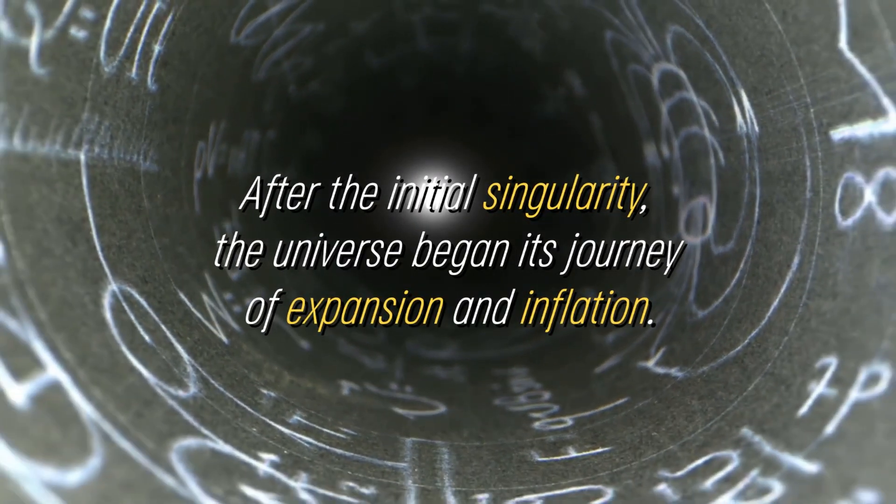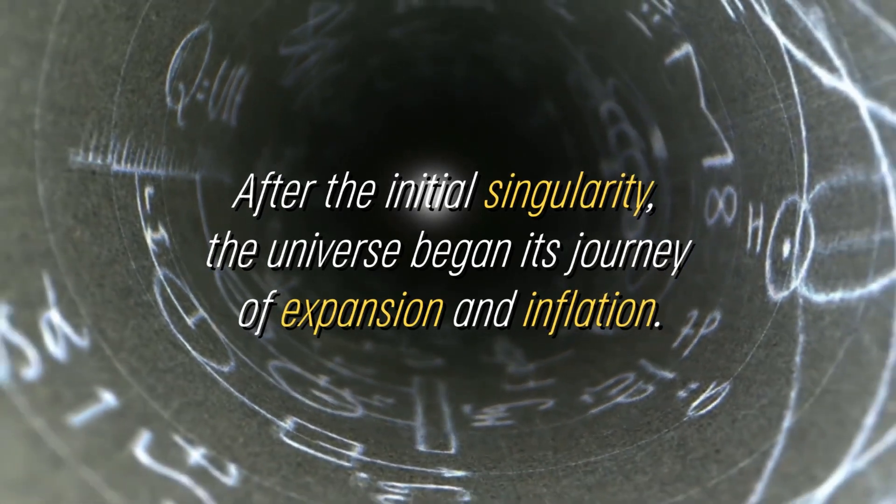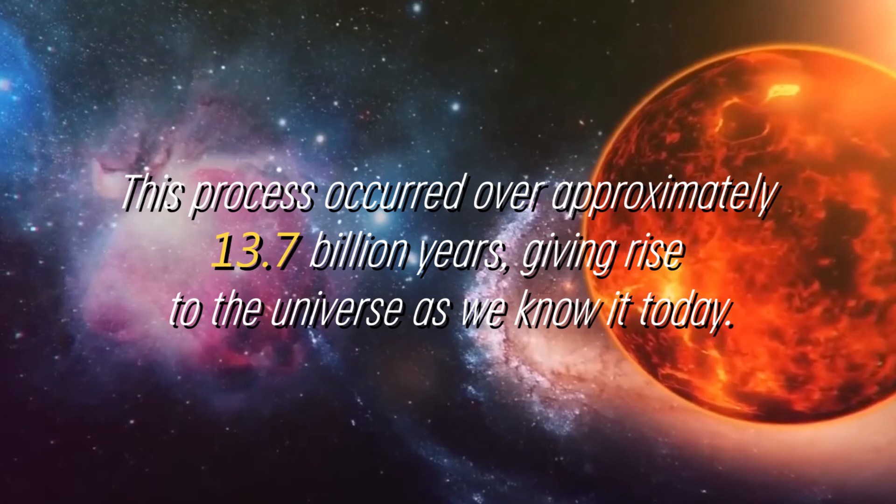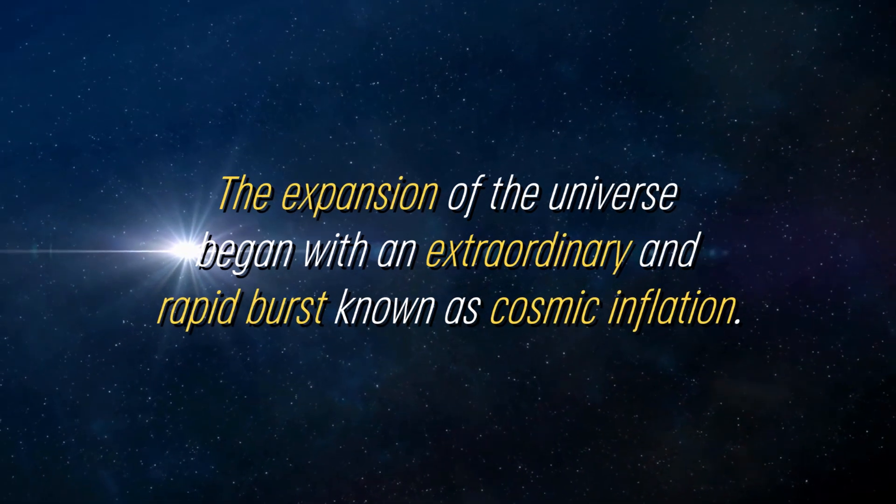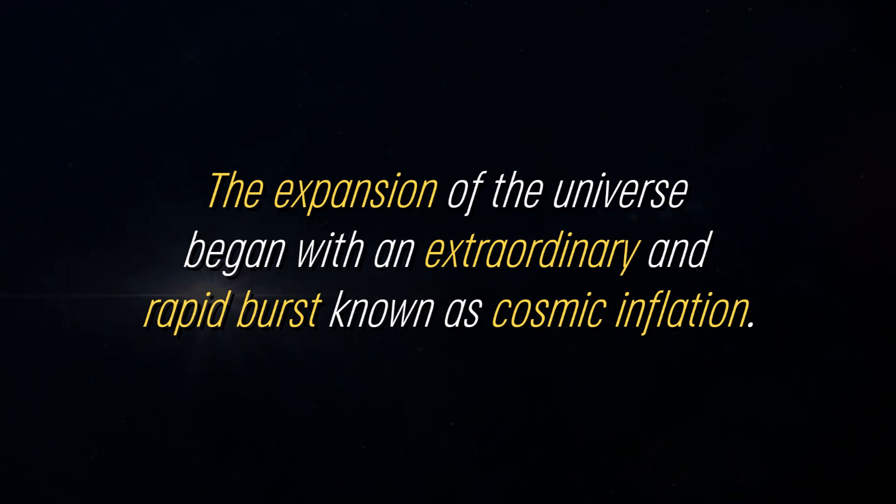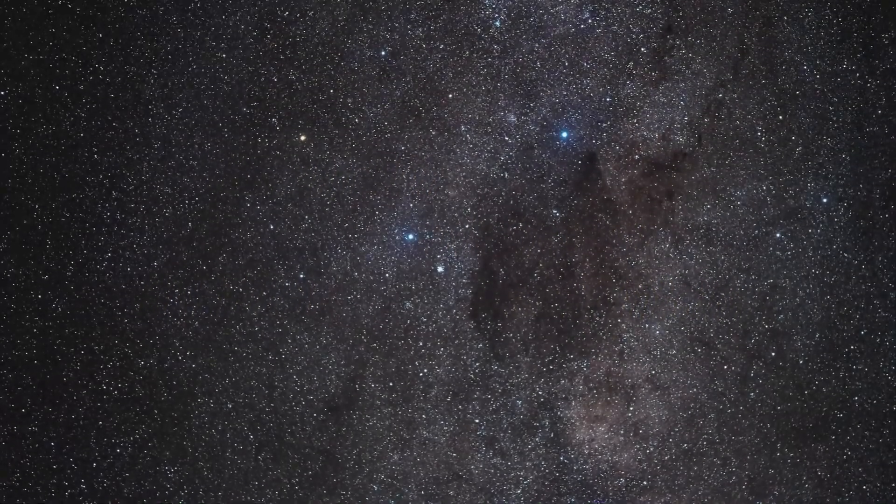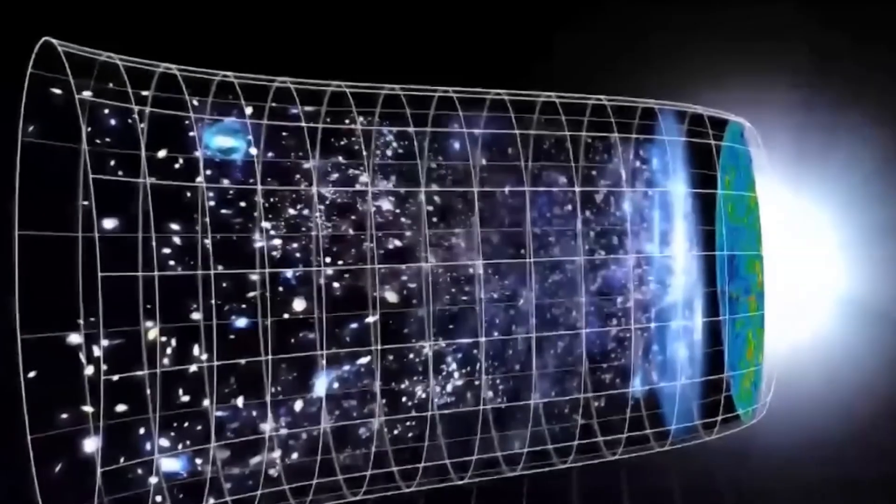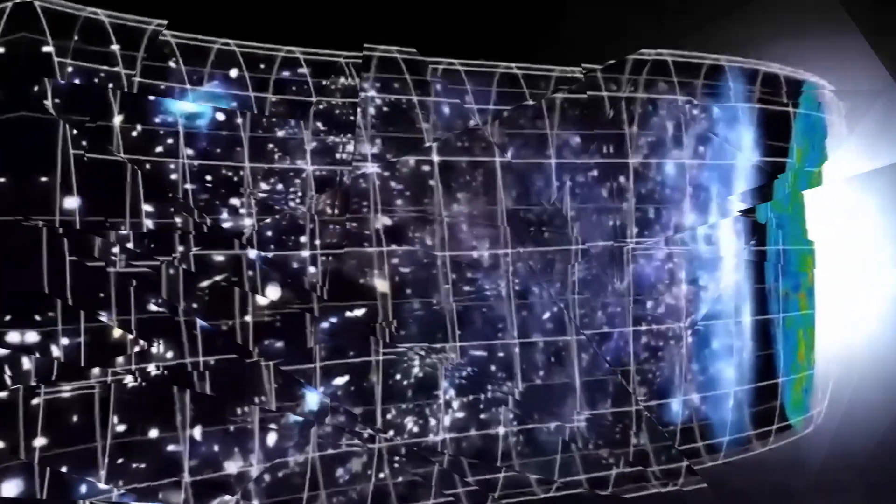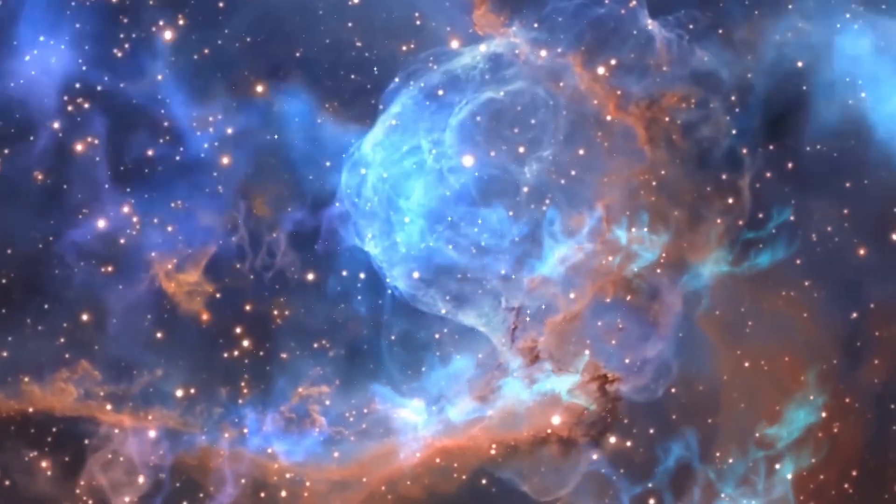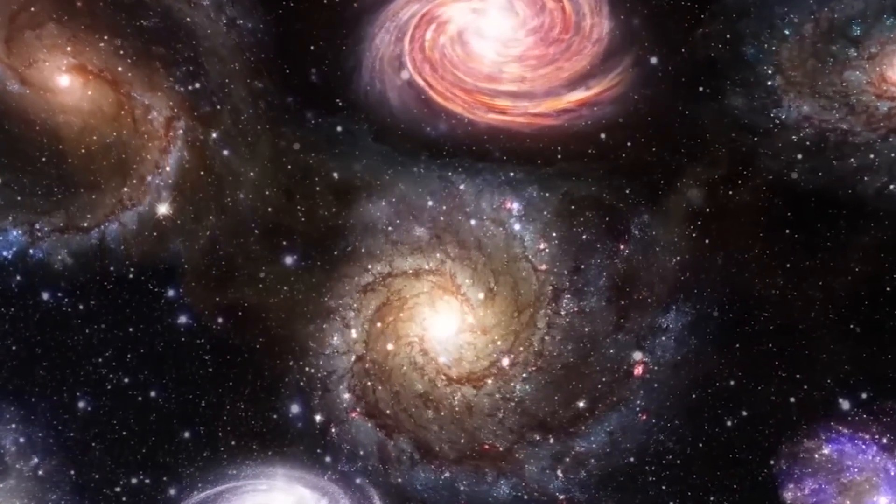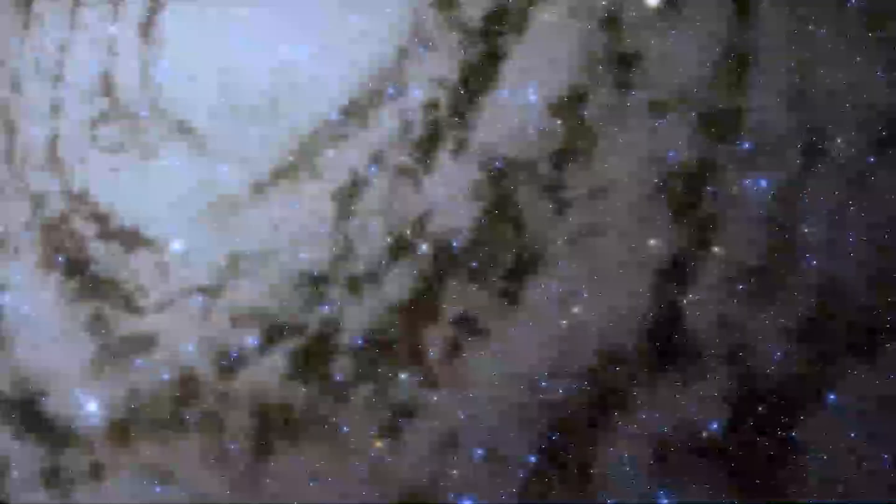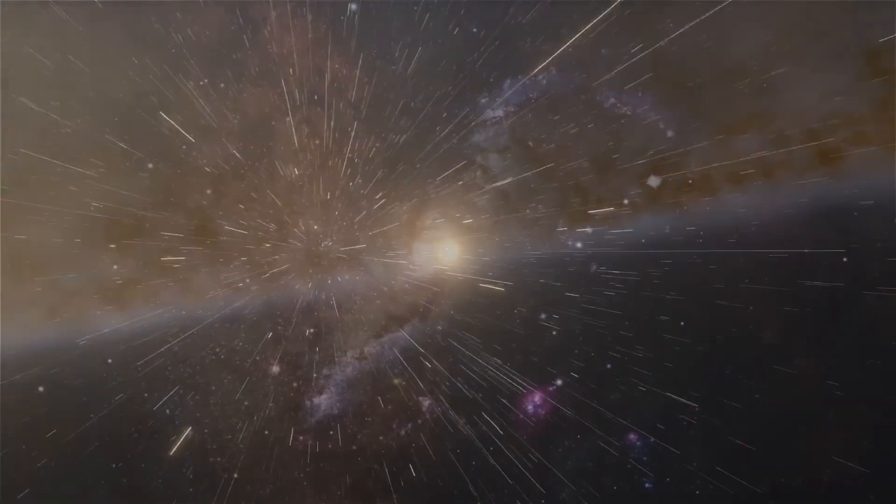After the initial singularity, the universe began its journey of expansion and inflation. This process occurred over approximately 13.7 billion years, giving rise to the universe as we know it today. The expansion of the universe began with an extraordinary and rapid burst known as cosmic inflation. During this phase, the universe expanded at an unimaginable speed, far exceeding the speed of light. It is as if the very fabric of space stretched and stretched, pulling everything within it with it. Cosmic inflation played a massive role in the formation of the large-scale structure of the universe. It smoothed out irregularities, homogenized the distribution of matter and energy, and paved the way for the subsequent formation of galaxies, stars, and other cosmic structures.